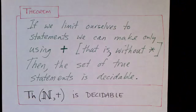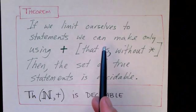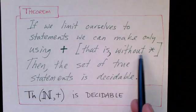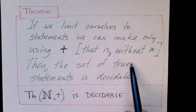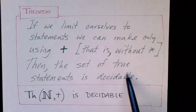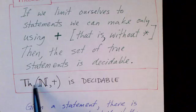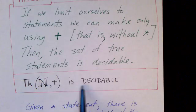Now one interesting result is that if we limit ourselves to making statements in number theory using only addition—that is, we don't use multiplication at all—then the set of statements that we can make, the set of true statements, is decidable. We can decide whether a statement is true or not. So we can express that this way: the theory of numbers using addition is decidable.